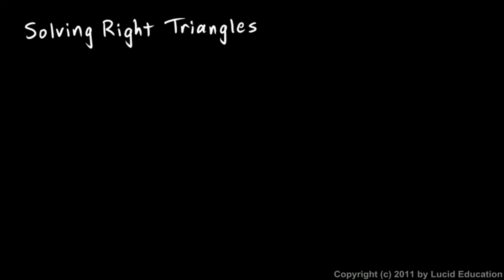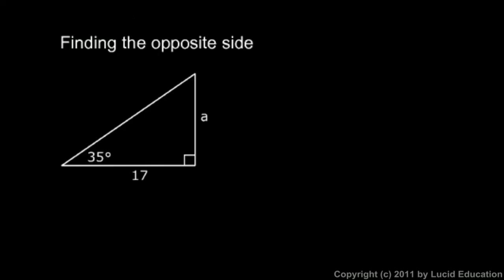We'll start off with solving right triangles. Here's our first example: finding the opposite side. Notice what we're given. We have a 35 degree angle, and the side opposite the 35 degree angle is unknown, so we've named it with a variable, a. We know the adjacent side, that's given as 17.